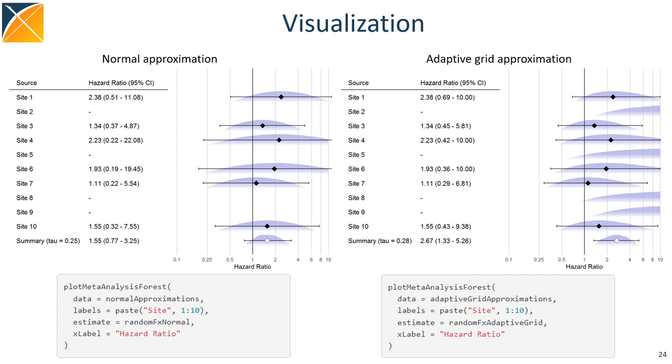When we visualize this, it may become clearer what is happening. Here, I'm showing forest plots. The bluish curves show the partial likelihood distributions. On the left, these distributions are assumed normal, and for sites 2, 5, 8, and 9, we have zero counts, so no normal approximations.